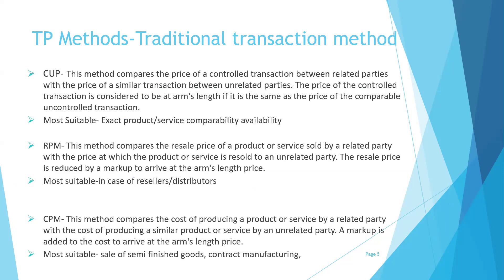Coming to the broad overview of each method: first, the CUP method — the comparable uncontrolled price method. As the name suggests, it compares the price of a controlled transaction between related parties with the price of a similar transaction between unrelated parties. The price of the controlled transaction is considered to be at arm's length if it is the same as the price of the comparable uncontrolled transaction.